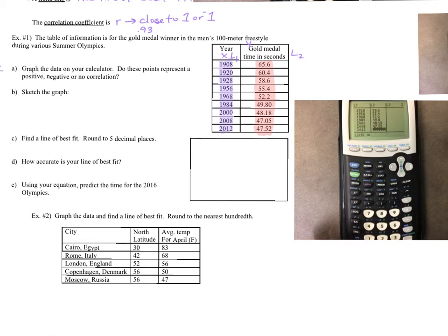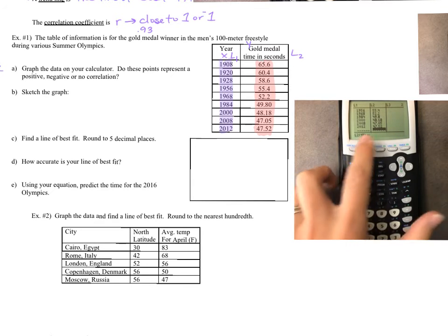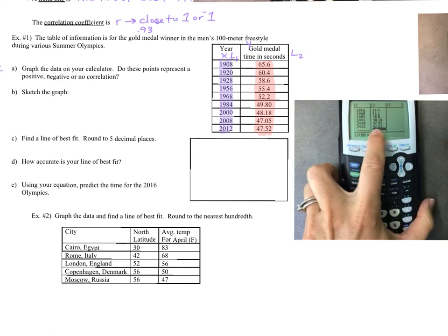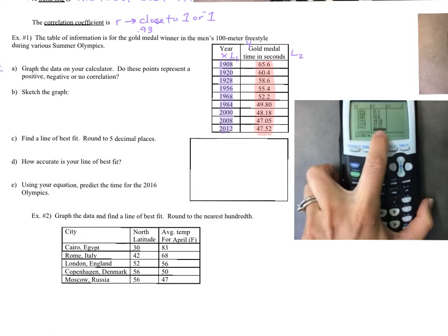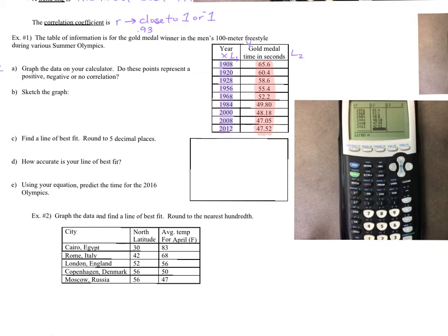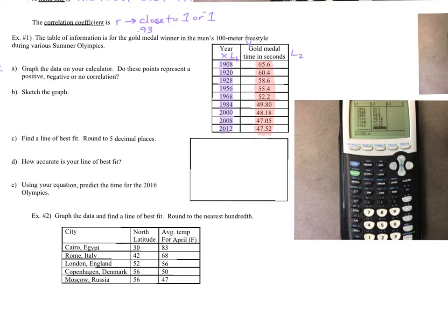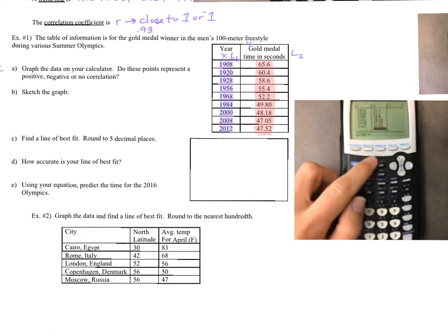Now that our data is in, before sketching we'll look at the graph. Hit zoom, which is that middle button up top, then nine. You can see all the points. Would you say that's positive, negative, or no correlation? That is a negative correlation — it's on its way down — so we'll write negative.